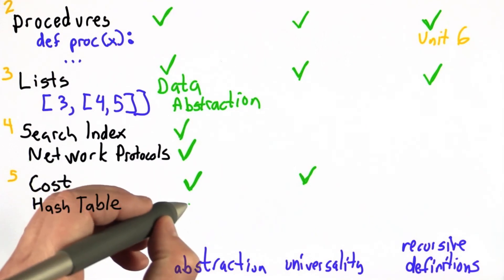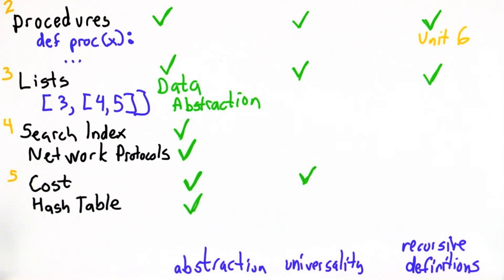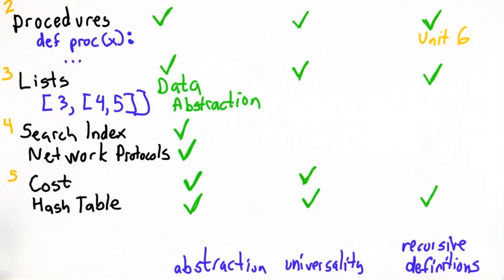And then we introduced the hash table. This was a kind of data abstraction. It was universal in the sense that it could contain any kind of element as its values. And we didn't define it recursively. We could certainly have hash tables containing other hash tables, and we have dictionaries of dictionaries. So this also certainly has aspects of recursive definitions in place.